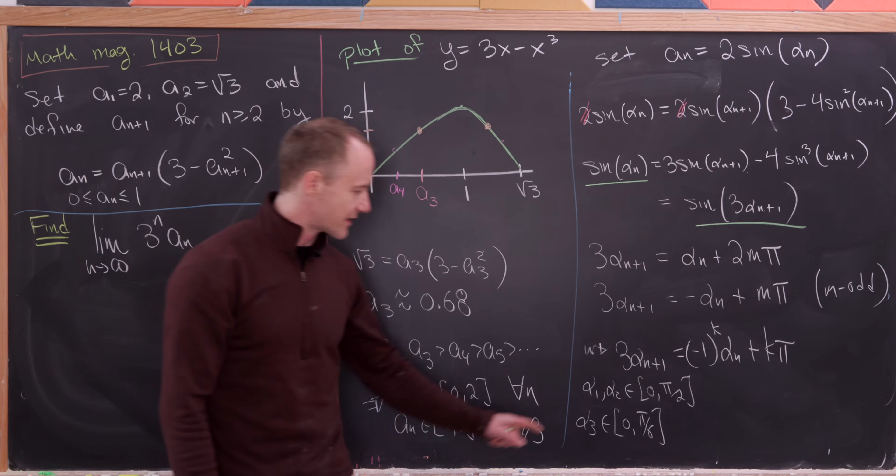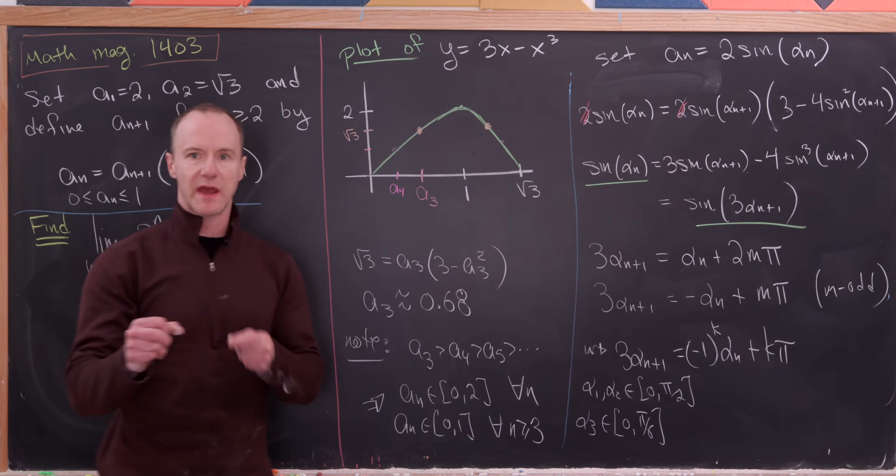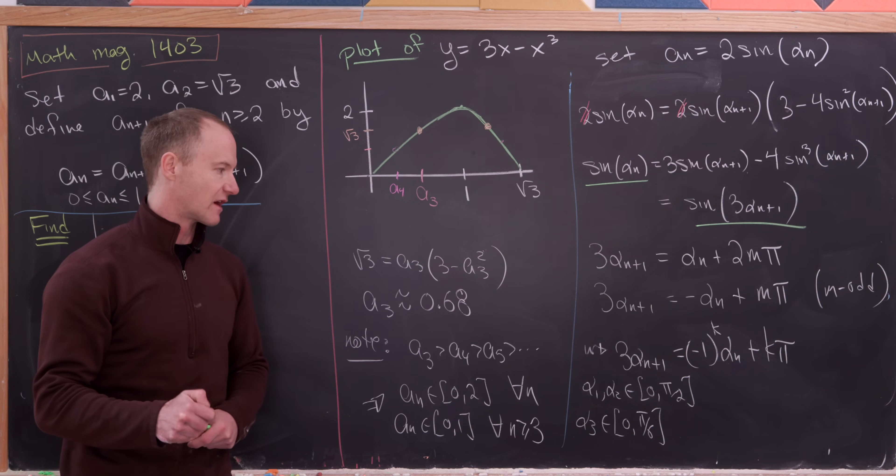But then if alpha 3 is chosen between 0 and pi over 6, but then combining together these restrictions on our alphas together with this rule comparing our alpha n plus 1 with our alpha n,